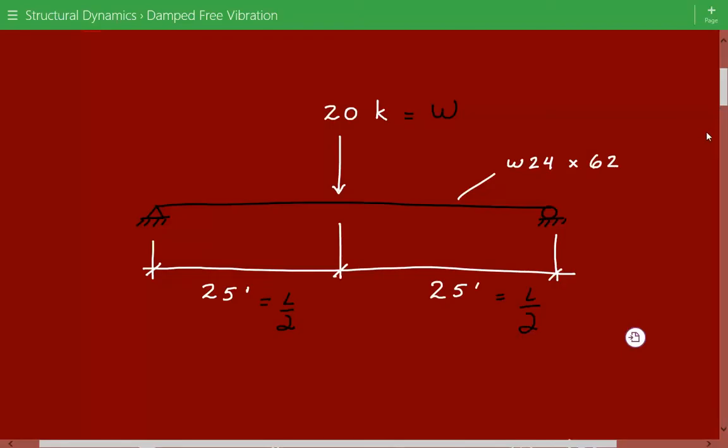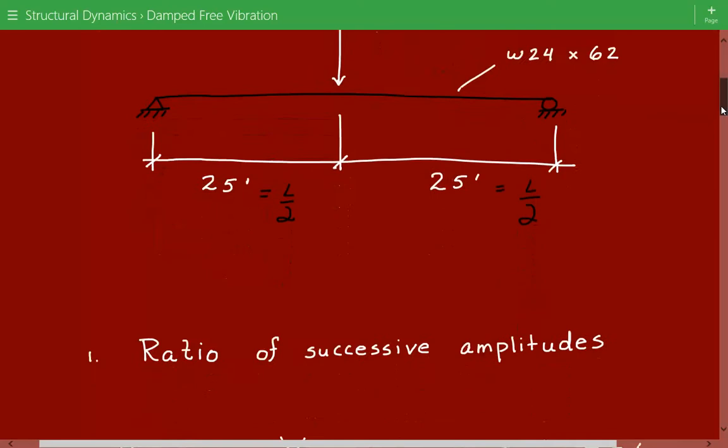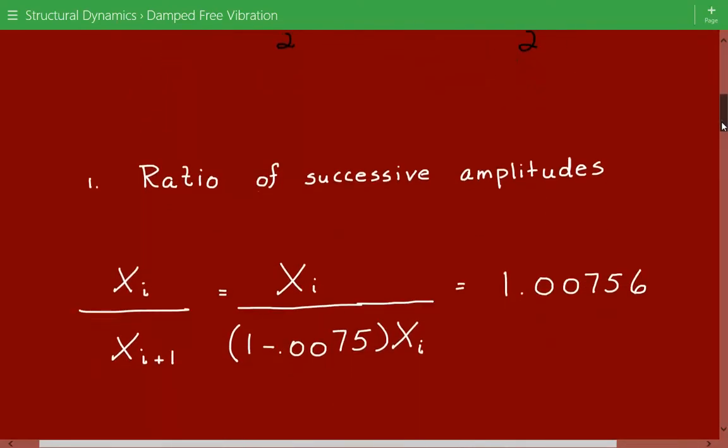And now coming back to our damped free vibration problem. The first thing we need to do is calculate the ratio of the successive amplitudes.